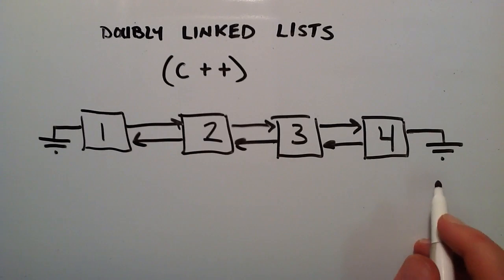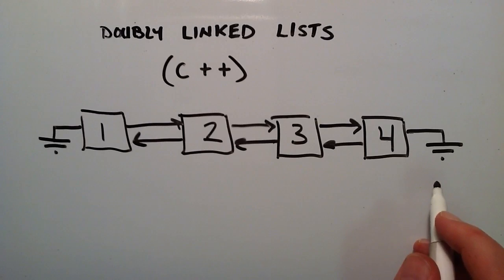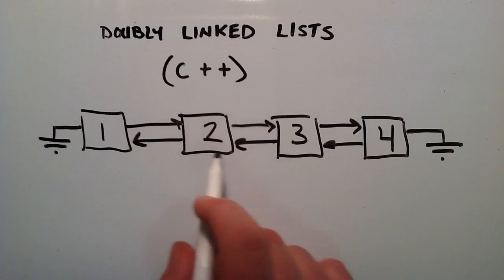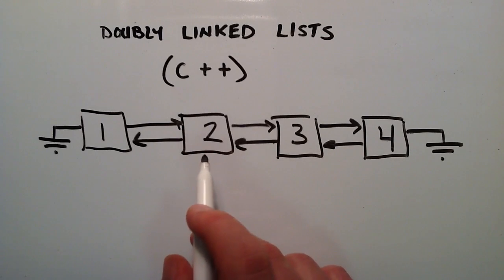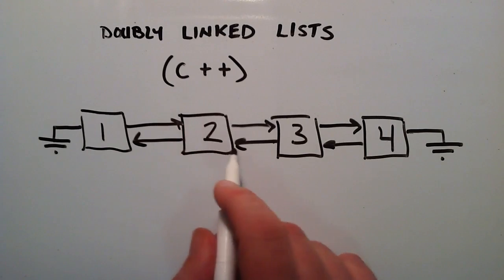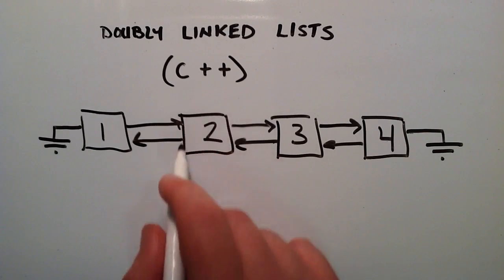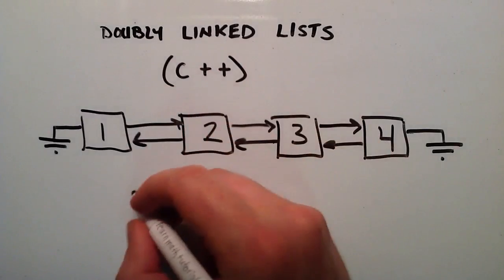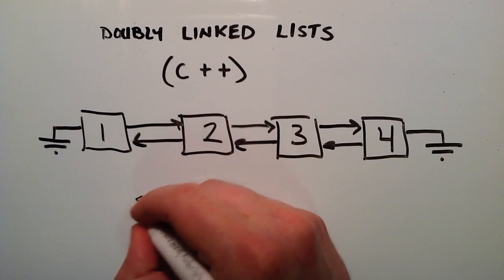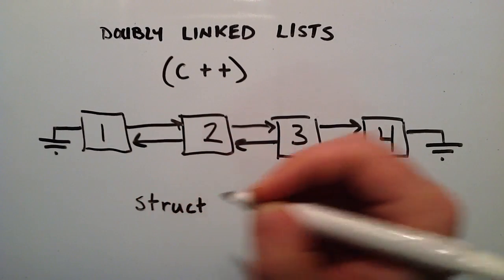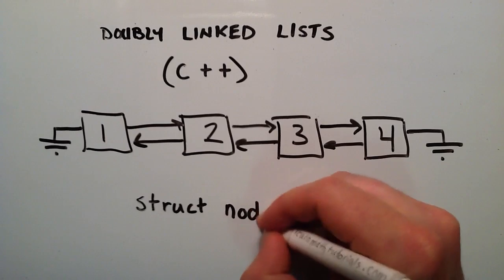So this is the basic structure of a doubly linked list. It's really similar to a singly linked list — the big difference is the way we define our nodes. To define a node for a doubly linked list, we simply type in struct and then name our struct node.